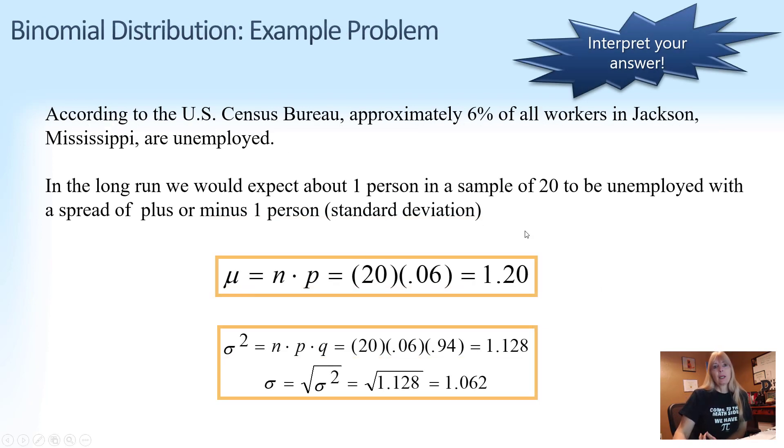And so the big thing though is to understand what these numbers mean. So in the long run, I would expect about 1 person in a sample of 20 to be unemployed with pretty much, and remember we like the standard deviation because it's the same unit, with pretty much plus or minus 1 person.